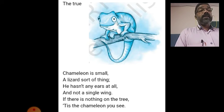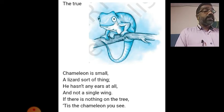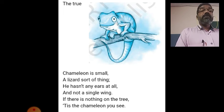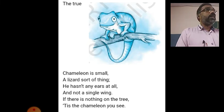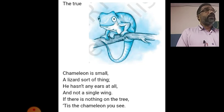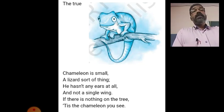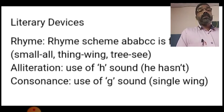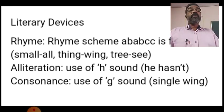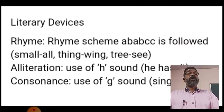Finally, the poet gave us the identity of the chameleon: it looks like a lizard, it has no ears and no wings, and if you don't find anything on a tree, then you can be sure that there is a chameleon. The literary devices used here — first, the rhyme scheme is the same as the above stanzas: A-B-A-B-C-C.